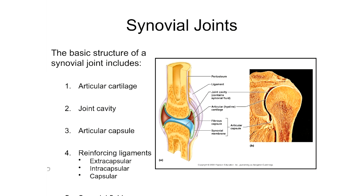When articular cartilage breaks down, that's what causes osteoarthritis. You can see articular cartilage in white lining the head of the humerus and the clavicle on the actual shoulder image, along with the joint cavity normally filled with synovial fluid. This space allows the bones to move, giving diarthrotic joints their much greater flexibility.